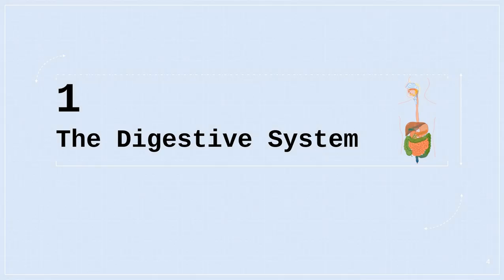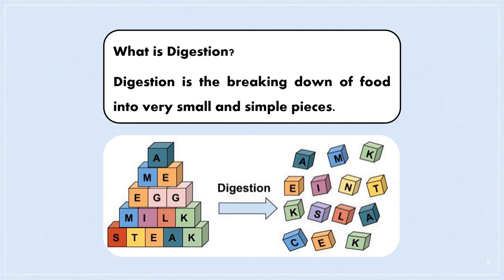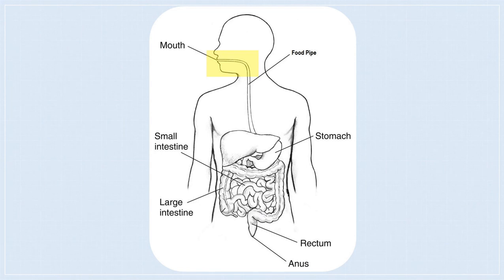The first one we are going to talk about in this video is the digestive system. What happens to the food we eat? For us to get all the nutrients and energy from the food that we eat, food must be digested. Digestion means that food has to be broken down into very small and simple pieces — this is called digestion of food. The food is digested by a group of organs that form our digestive system.